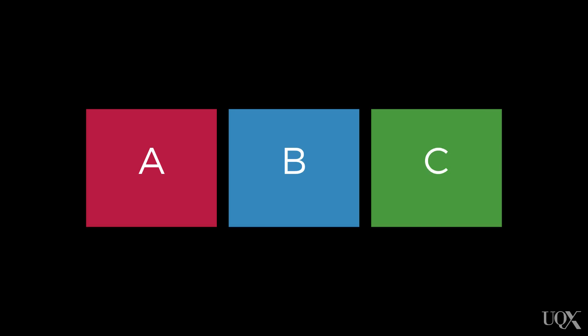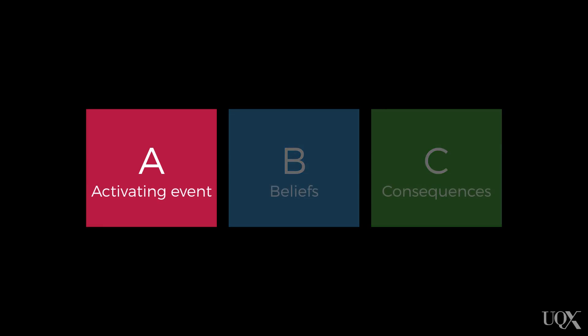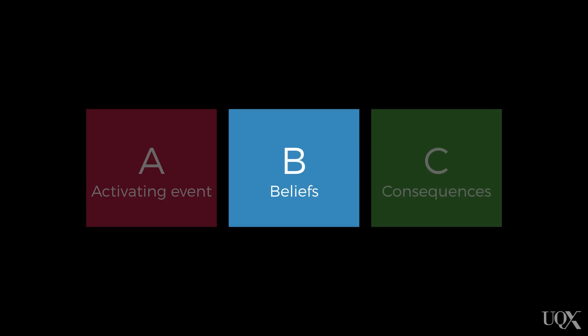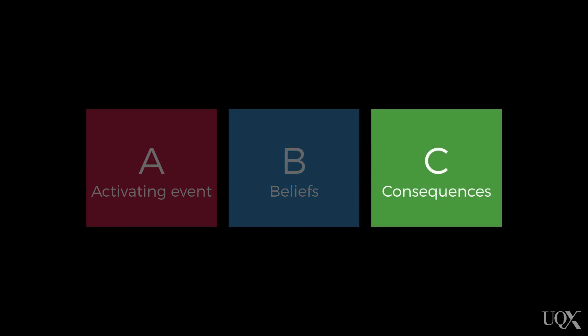The model that underpins the cognitive element of cognitive behavioural therapy is the ABC model. A stands for activating event, B stands for your beliefs or thoughts about that event, and C stands for consequences — that is, your emotional, physiological and behavioural consequences.